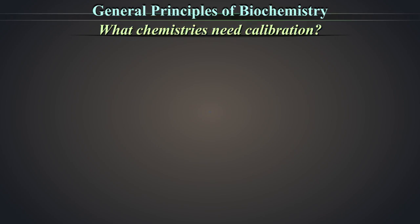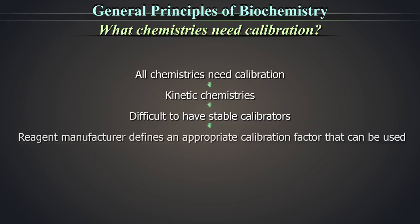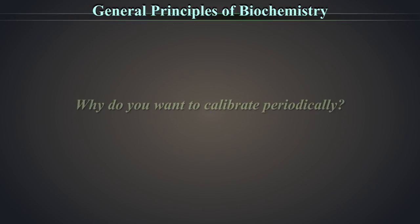What chemistries need calibration? All chemistries need calibration. However, for certain chemistries like kinetic chemistries, it is difficult to have stable calibrators and so the analytical system defines an appropriate calibration factor that can be used. This needs verification with QC every day.